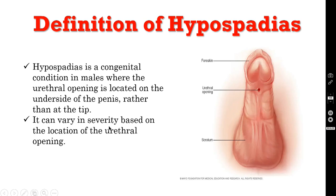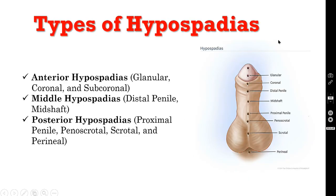It can vary in severity based on the location of the urethral opening, which may range from near the tip all the way up to the perineum. Broadly, we can divide hypospadias into anterior, middle, and posterior types. Anterior hypospadias consists of glanular, coronal, and subcoronal varieties. Middle hypospadias consists of distal penile and mid-shaft. Posterior hypospadias consists of proximal penile, penoscrotal, scrotal, and perineal.